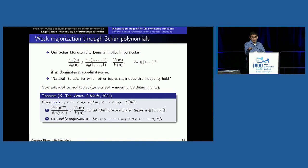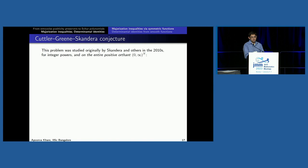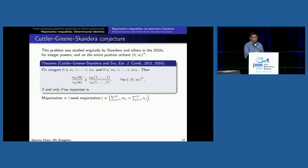This idea of dominating over the value at one started about ten years ago when Cuttler, Greene, and Skandera looked at this exact question for Schur polynomials over the entire positive orthant. They proved one half of the if-and-only-if, and Suvrit Sra at MIT proved the other half: this inequality holds over the entire orthant if and only if M majorizes N. Over the log-positive orthant it's if and only if M weakly majorizes N; over the entire orthant it's if and only if M majorizes N.